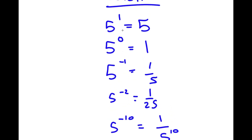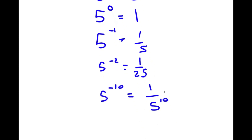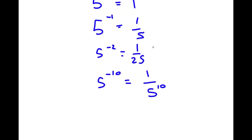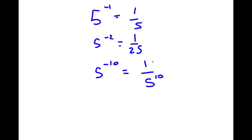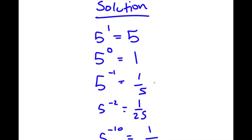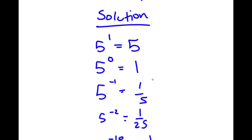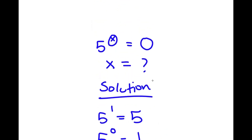As you see, as the exponent keeps on decreasing, the value is approaching zero — but will it ever actually reach zero? Let's see if we can find a value of x that makes this equal to zero.